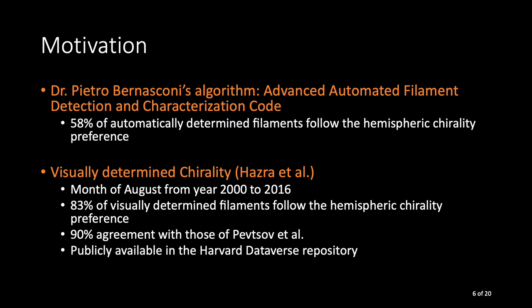We can see that visually determined results are better, but it requires a lot of time and energy. Also, it is prone to human errors. Therefore, we are trying to develop a deep learning architecture which can determine filaments chirality. We are using Hazara's visually determined chirality results for training and testing our architecture.